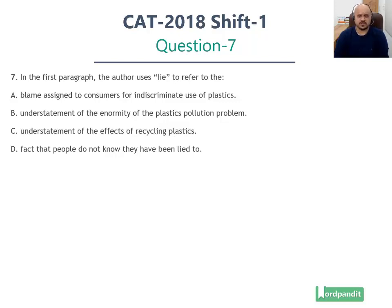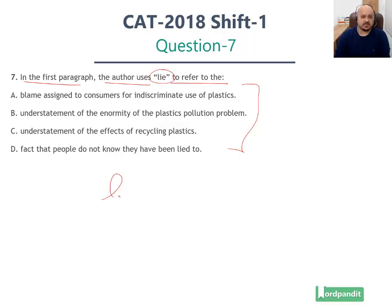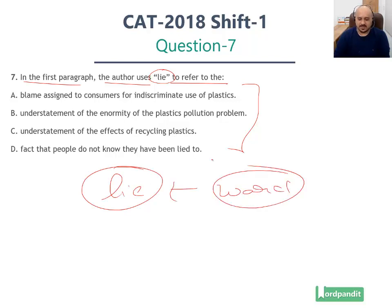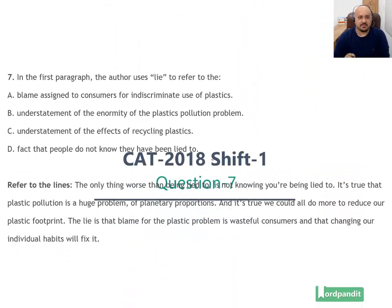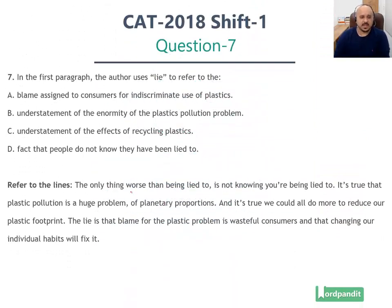Before you go through this video solution, make sure you solve the passage and you've also gone through the passage analysis video. Now, what does this specific question talk about? This specific question says: in the first paragraph, the author uses 'lie' to refer to the... We are given four options and we've got to figure out what does the word 'lie' refer to. Let's refer to the context and identify where the word is being used specifically.